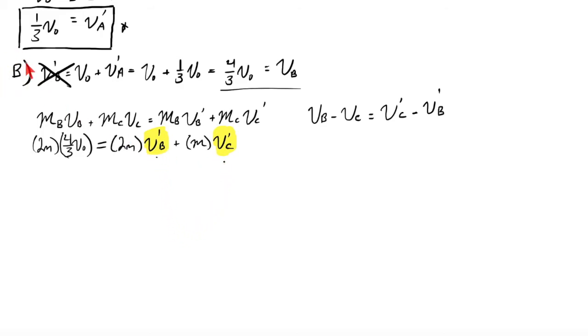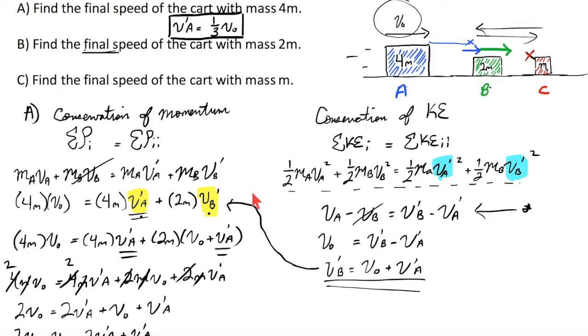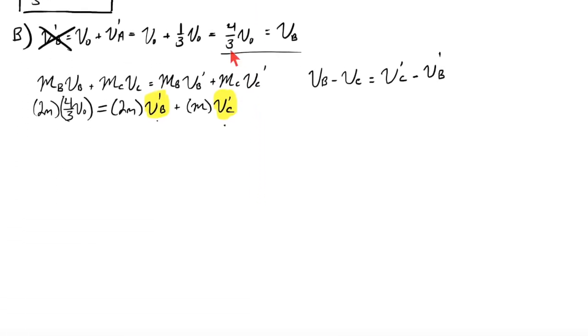two unknowns in this equation. But conveniently, both of these unknowns are answers to this problem. V prime of B is the answer to question B. V prime of C is the answer to this question up here, the final speed of the cart with mass M. There is nothing left for it to collide with. Now, to figure out what these two variables are, we'll go over to this one. VB, initial, four-thirds, V0. VC, initial, zero, so ignore it. V prime of C minus V prime of B. Those two are the same variables here. So, well,